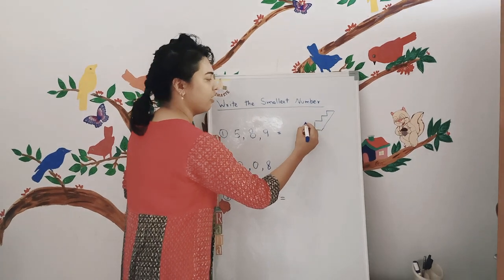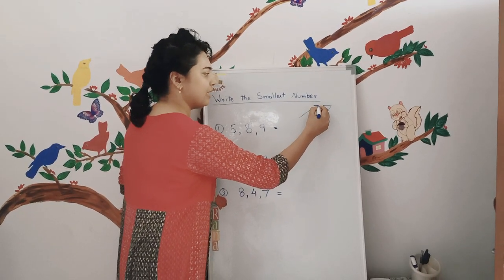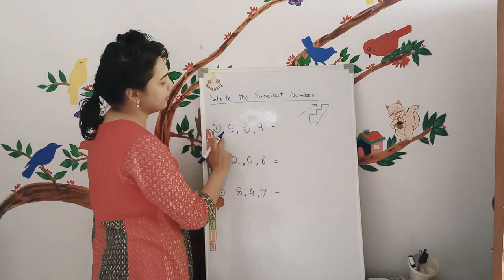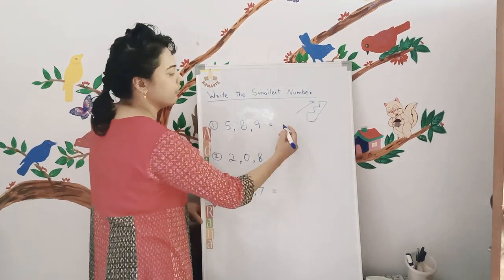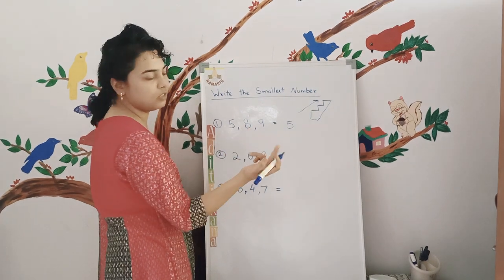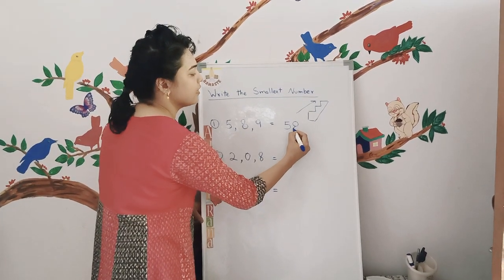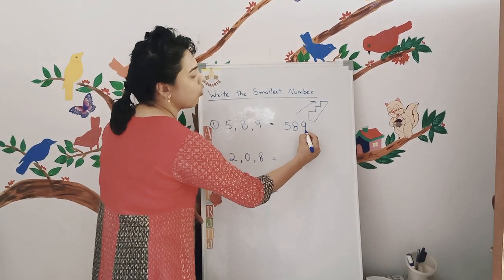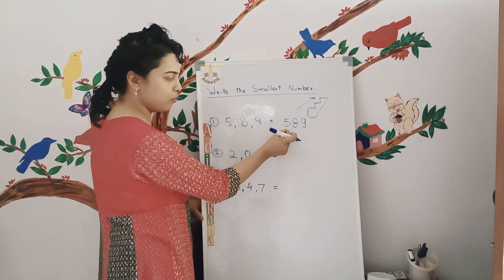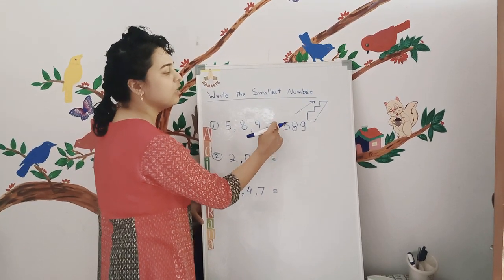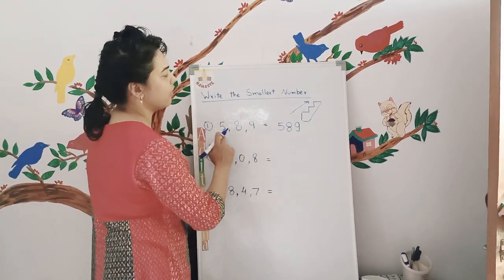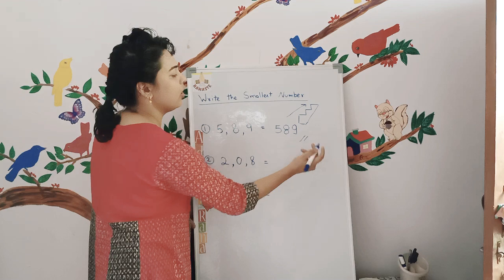Let's start. Here the smallest digit is five, so you write five first. Then the next digit is eight, and the biggest digit is nine. Always remember: in ascending order you write the smallest digit first and the greatest digit will be the last one. So this is how you write it in ascending order.